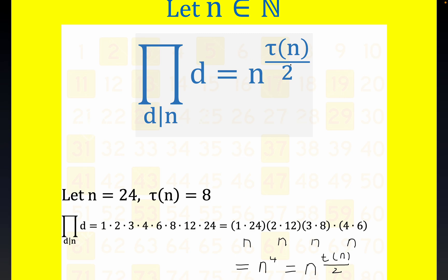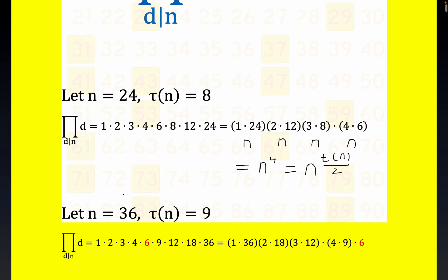But there's also something called a perfect square, and this is an example of a perfect square right here. This is equal of course to 6 squared, and it's not hard to show that any perfect square always has an odd number of divisors because of exactly what you see right here. 6 is a divisor, but it doesn't pair up with anything else other than itself.